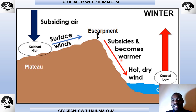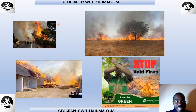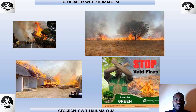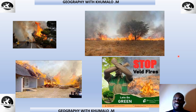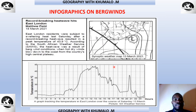Here is another diagram that may appear in an exam — you can see the Kalahari High Pressure Cell, wind going down the escarpment, and as it descends it becomes heated. This occurs in winter. Here are pictures of veld fires — that is what you must picture when they refer to veld fires in the context of berg winds. In an exam, this question may come as an infographic with a small text, a synoptic map, and a graph. You may get one or all of these in one diagram with questions.